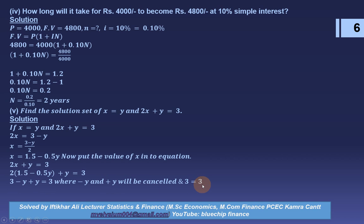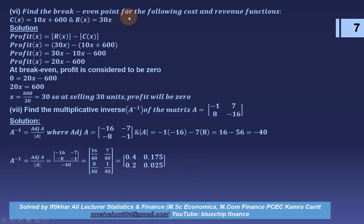Question 6: find the breakeven point for cost function C(x) = 10x + 600 and revenue function R(x) = 30x. Profit function = Revenue − Cost = 30x − (10x + 600) = 20x − 600. At the breakeven point, profit = 0, so 20x − 600 = 0, giving x = 600/20 = 30. At 30 units sold, profit will be zero.